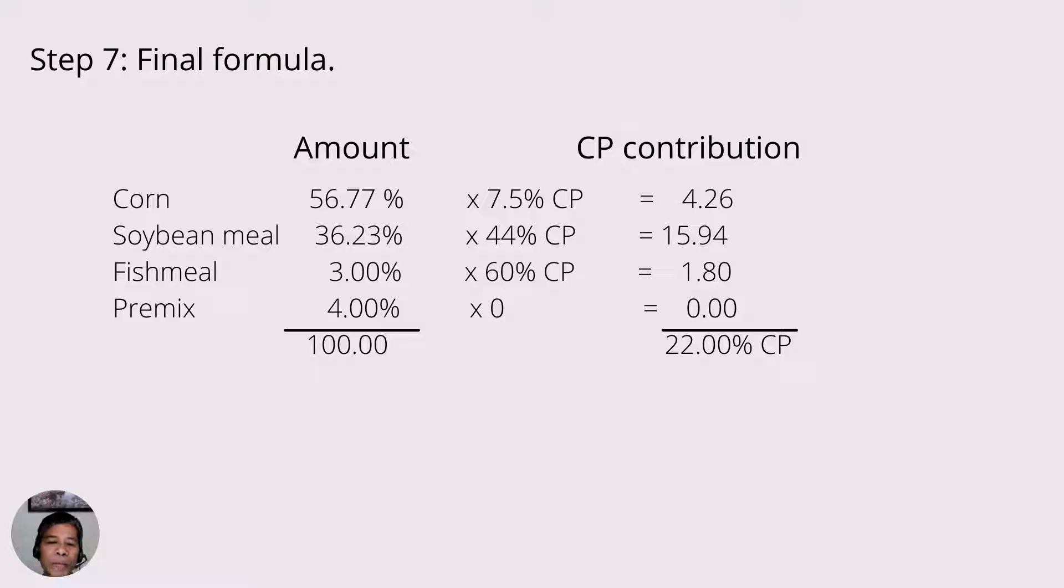The last step is to summarize our solution. Now, to check if our calculation is correct, we simply multiply the amount of each ingredient by their respective CP content.